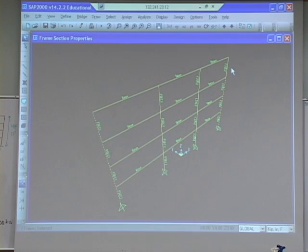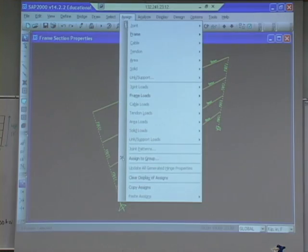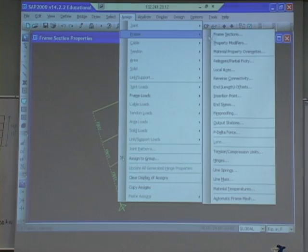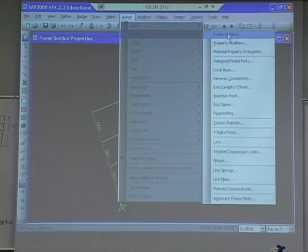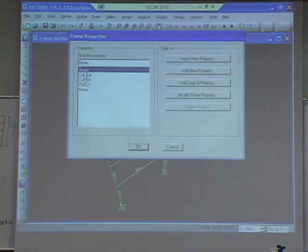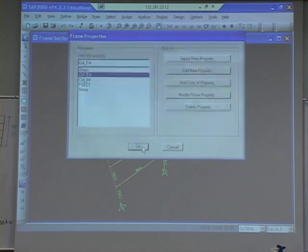It just picked the default section. So we need to fix that and go through and select the exterior columns. We need to assign those to be our exterior column sections and not the default sections that SAP assumed, which are typically steel elements.